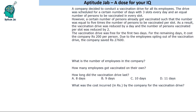Welcome to Aptitude Lab. This is a data caselet: a company decided to conduct a vaccination drive for all its employees. The drive was scheduled for a certain number of days with three slots every day and an equal number of persons vaccinated per slot. However, a certain number of persons already got vaccinated on their own, equal to five times the number of persons to be vaccinated per slot. As a result, the drive was reduced by a day and the number of persons vaccinated per slot was reduced by two. The drive was free for the first two days; for the remaining days it cost the company rupees 200 per person. Due to employees opting out, the company saved rupees 27,600.